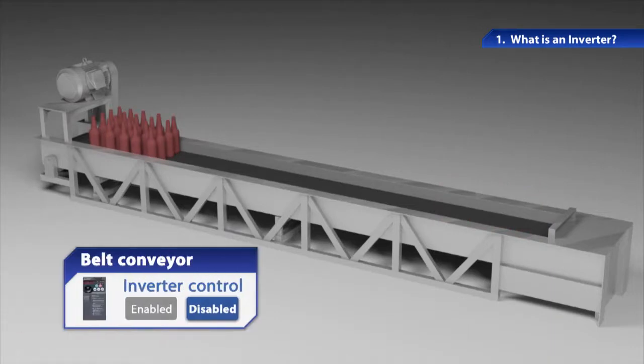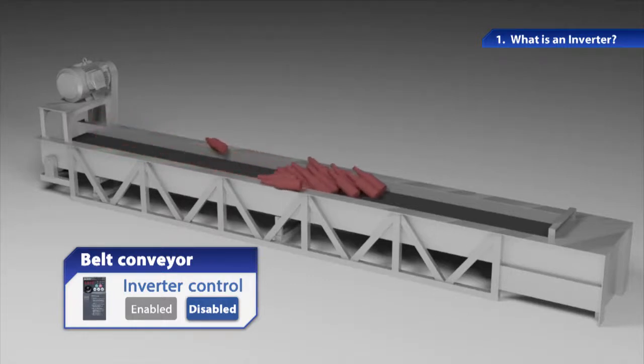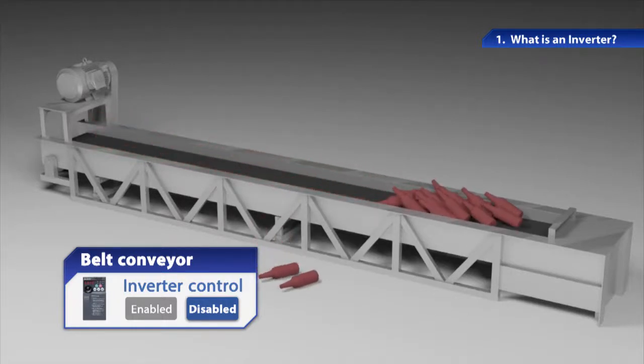What if the inverter is not installed? When the motor is switched on, the conveyor starts running abruptly, and the works fall over and drop.